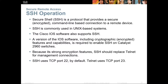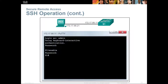SSH, or Secure Shell, is a protocol that provides secure, encrypted command-line-based connections — similar to Telnet but secure. SSH is commonly used in Unix-based systems, and Cisco IOS software supports SSH through a version that includes cryptographic features and capabilities. SSH is available on the Catalyst 2960 switch, and due to its strong encryption, SSH should replace Telnet. SSH uses port 22 by default; Telnet uses port 23. Here is an example of SSH-ing between a PC and a switch — you log in as a user and authenticate to connect.